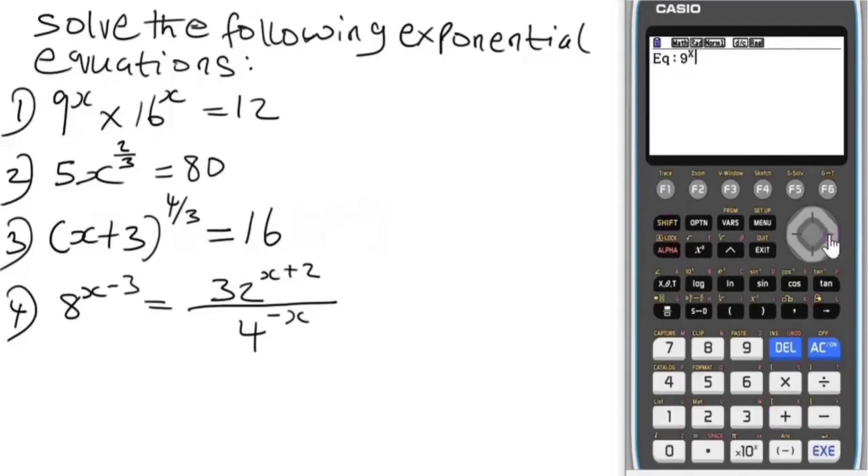It's going to be 9 to the power x. To make the power function, press this button. Then power of x, alpha x, equals 12. Press shift and this button.